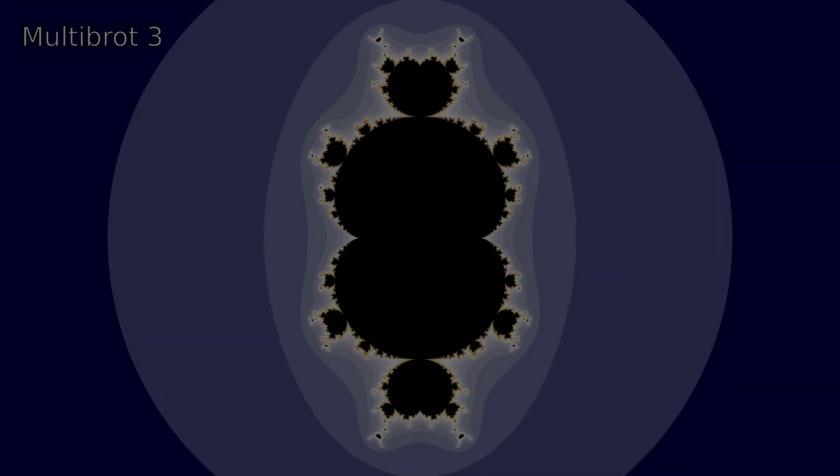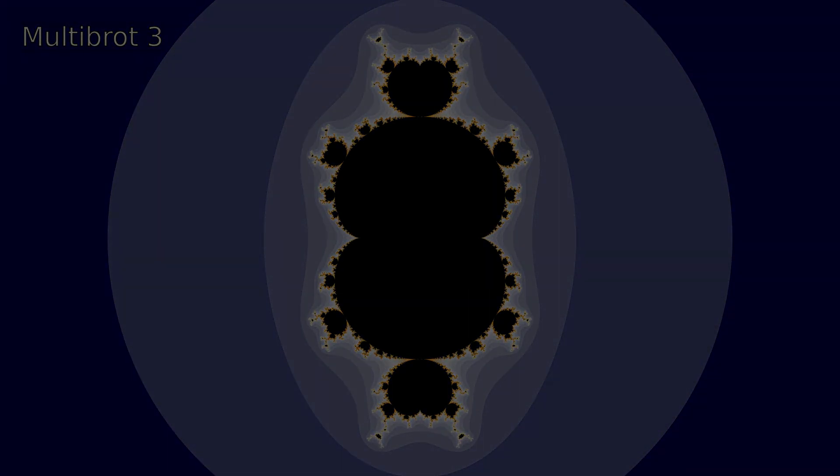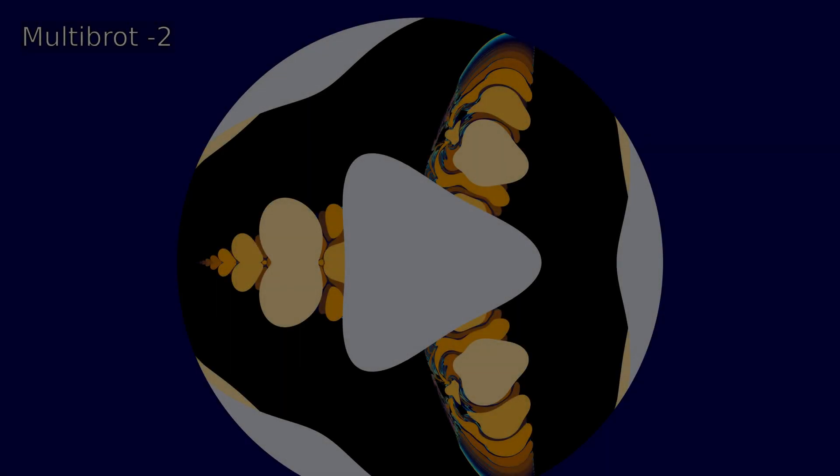Next up are a few multibrot sets, which are Mandelbrots with a different exponent. This is the exponent three and here we have exponent minus two.